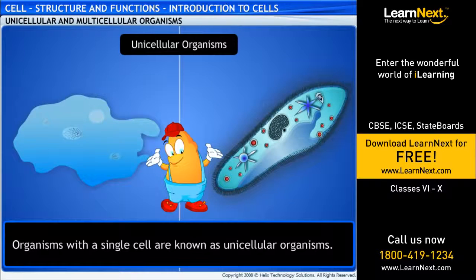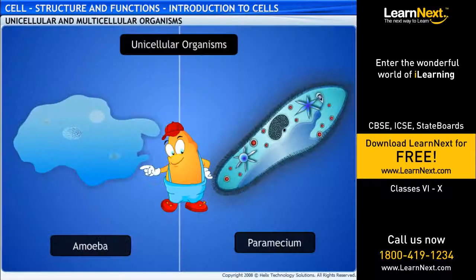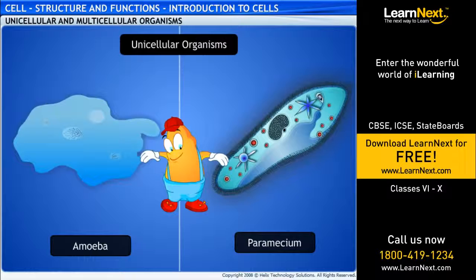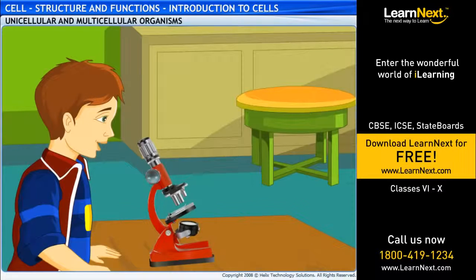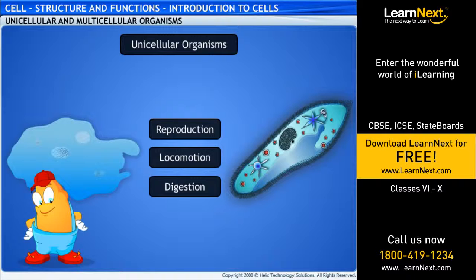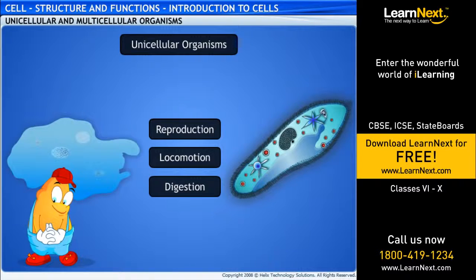On the other hand, organisms with a single cell are known as unicellular organisms. For example, look at the specimens of amoeba and paramecium — the bodies of these organisms are made up of a single cell. Do organisms with a single cell perform all their activities in the same way as multicellular organisms? Sure they do. The single cell in these organisms is built in such a way that it performs all its vital activities like reproduction, locomotion, digestion, and so on.